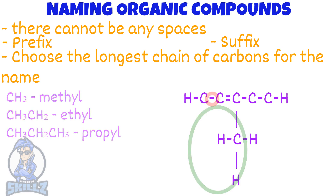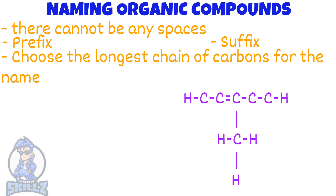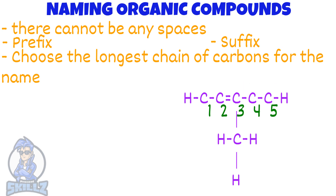Back to the naming problem. The way we solve this is by numbering. First, start from the right and add numbers till the end. Then start from the left and add numbers. Choose the one which gives the smallest number. In this case, left to right, as it gives 2,3 opposed to 3,4.